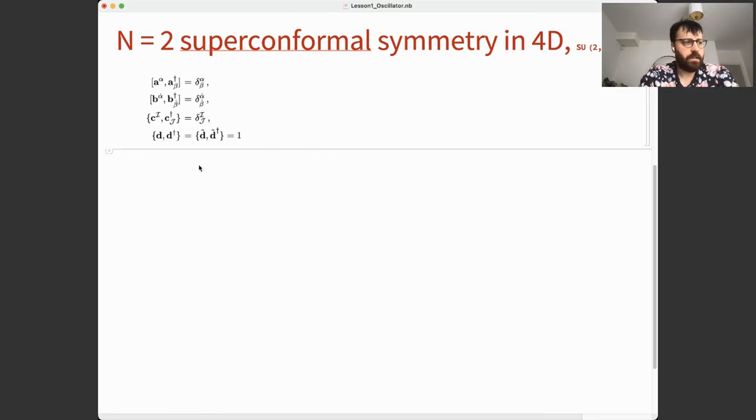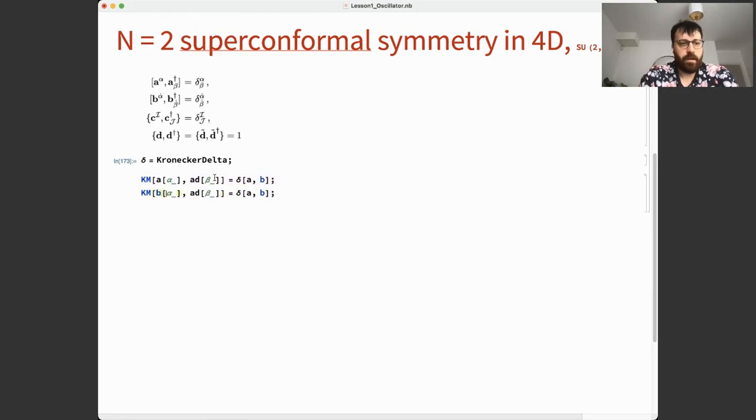In order to keep this neat, let me first define the Kronecker delta shortcut. I want to define all possible right-hand sides. KM will refer to super or usual commutator. It will be either Kronecker in the case of a with a dagger, and I define this so that if I want to change, I change only in one place. Also for B commutator, and for C, and D with D dagger, and D tilde with D tilde dagger.